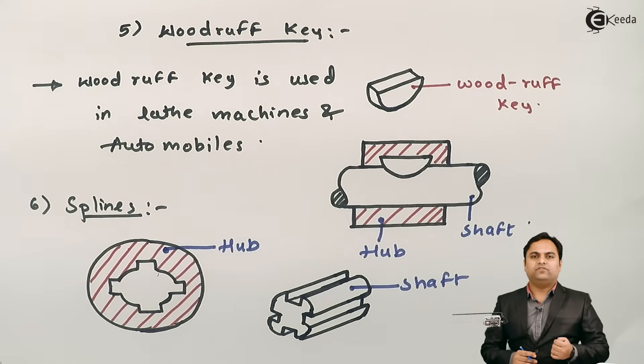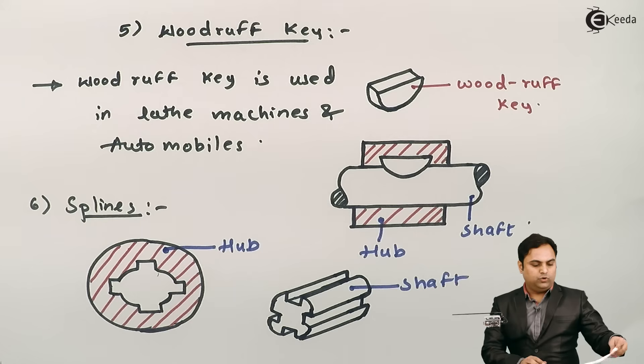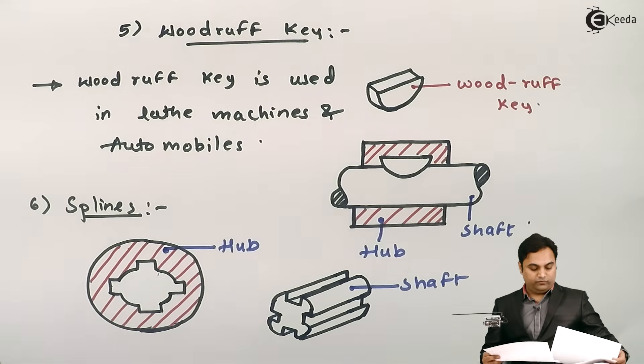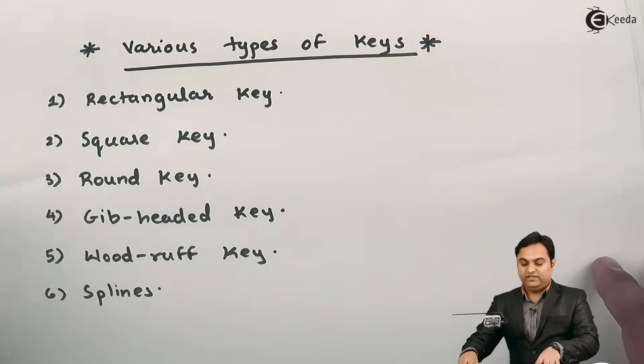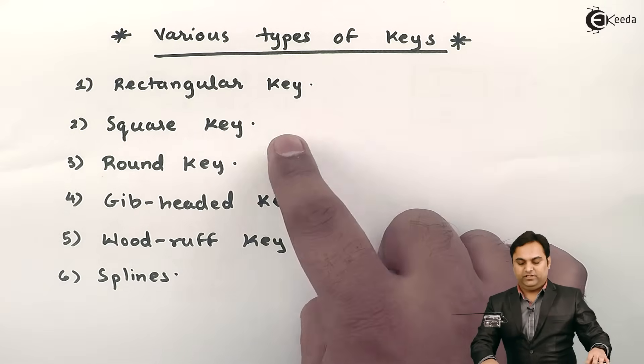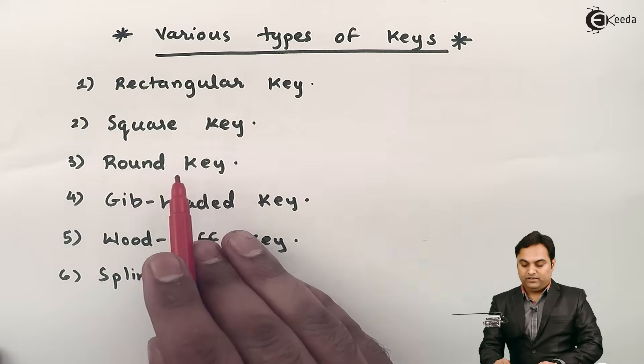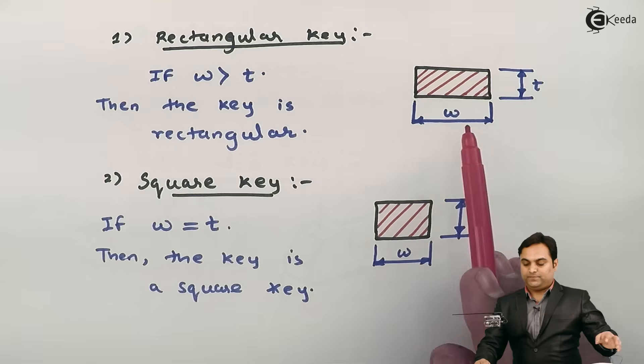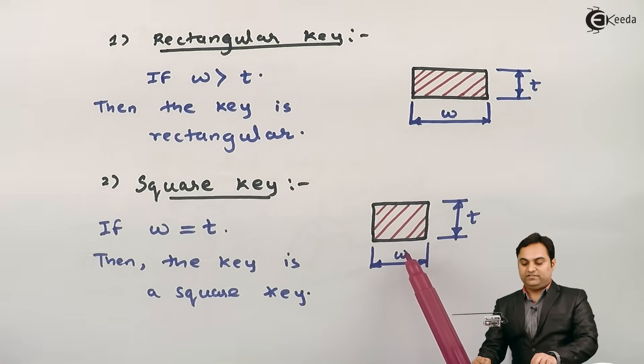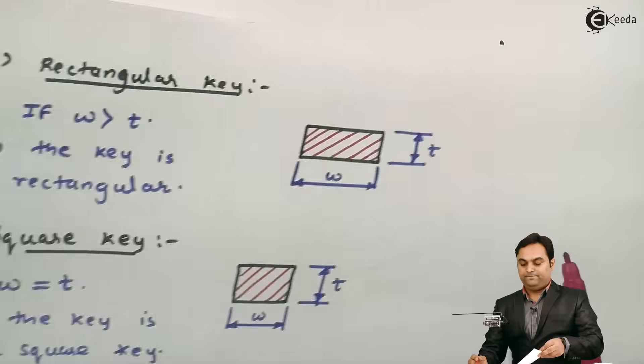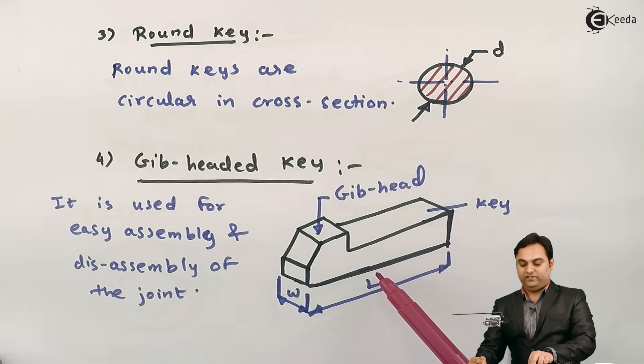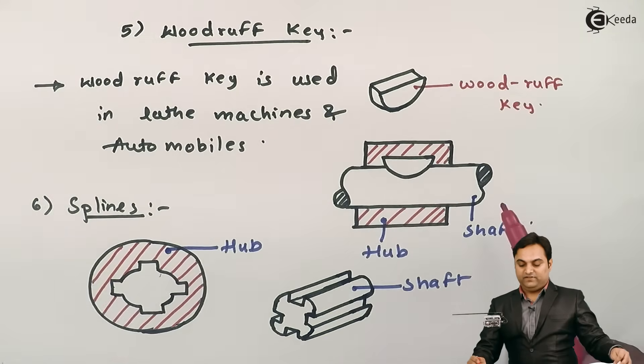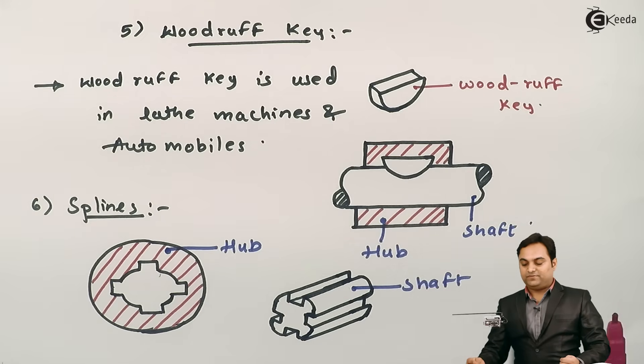So here in this video we have seen various types of keys starting with rectangular key, then square key, round key, gib-headed key, Woodruff key, and splines. Each one was explained with its cross-section area or we can say the construction. Here also I have explained all the types of key, and at last we have seen Woodruff and splines. So I hope the explanation part was understood.